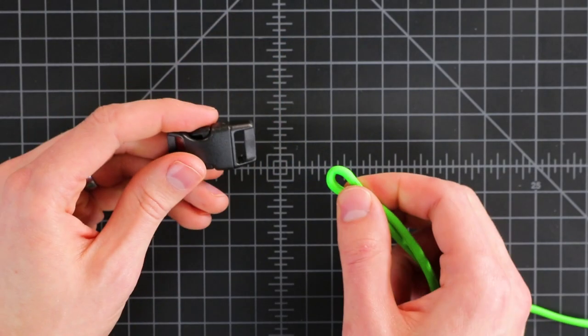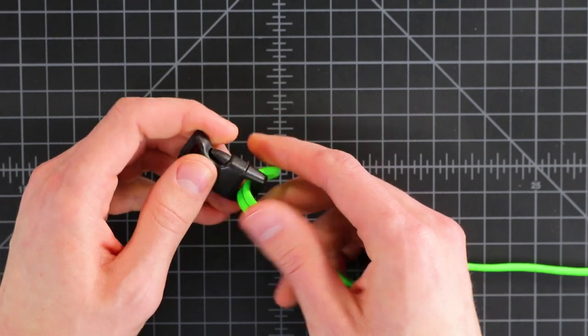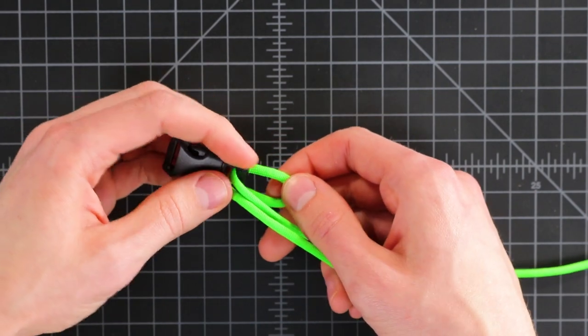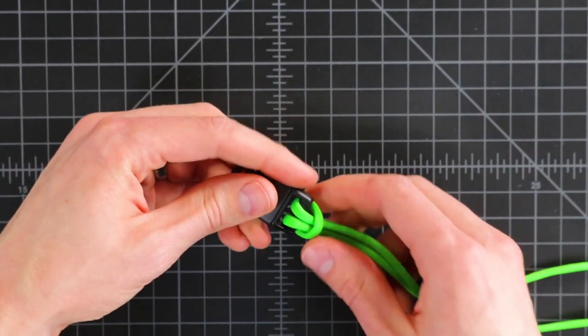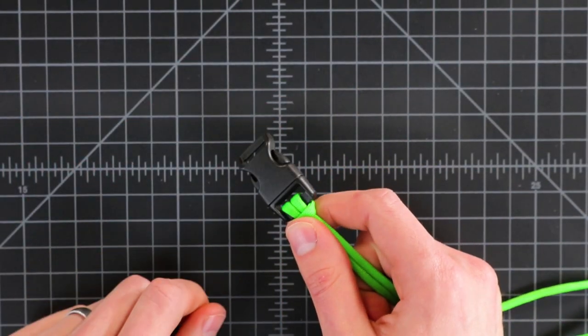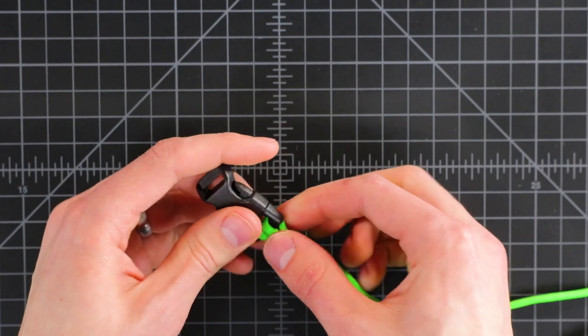So we'll just start by going down through the middle like you do for a normal cow's hitch. I've got a bigger buckle here. Sometimes people like to put a bigger buckle on their bracelets and so this knot is especially useful for that.